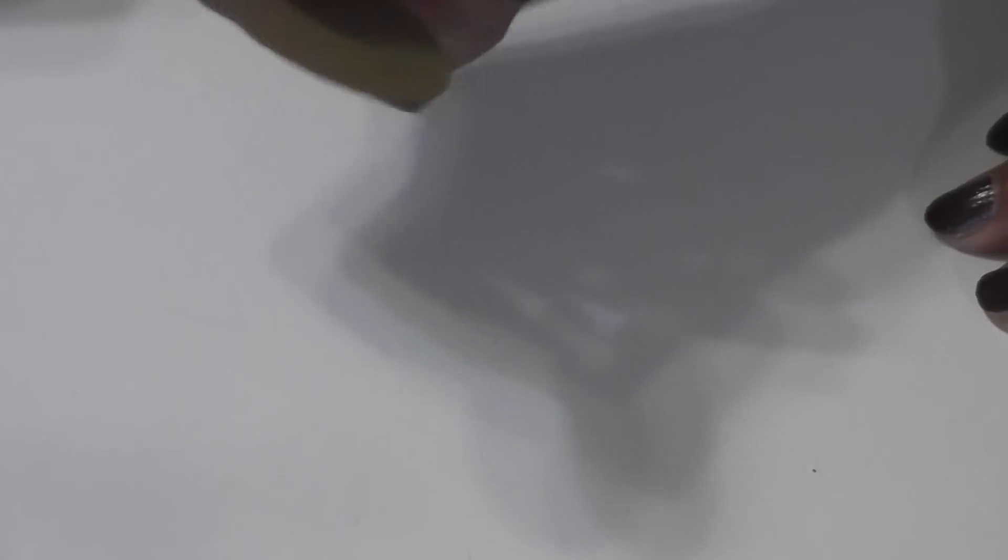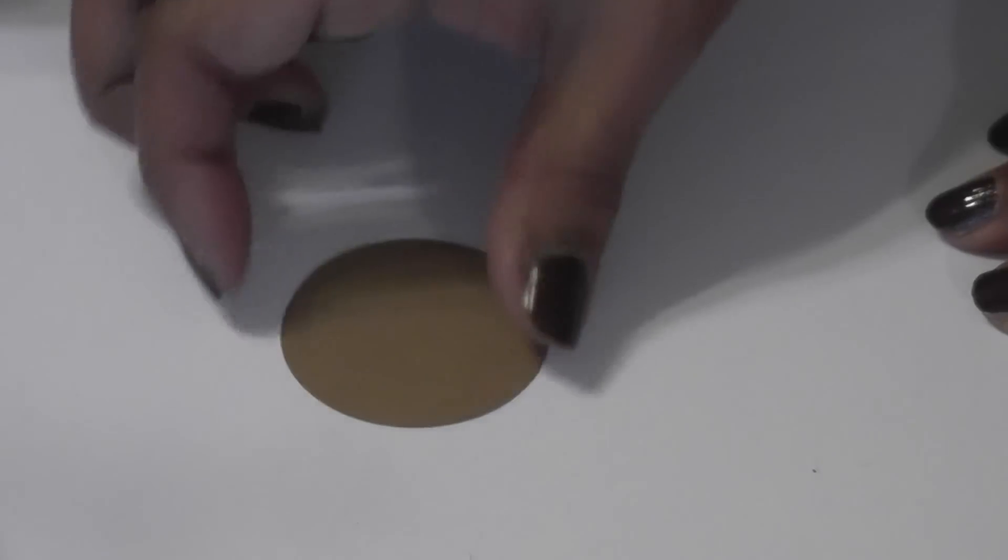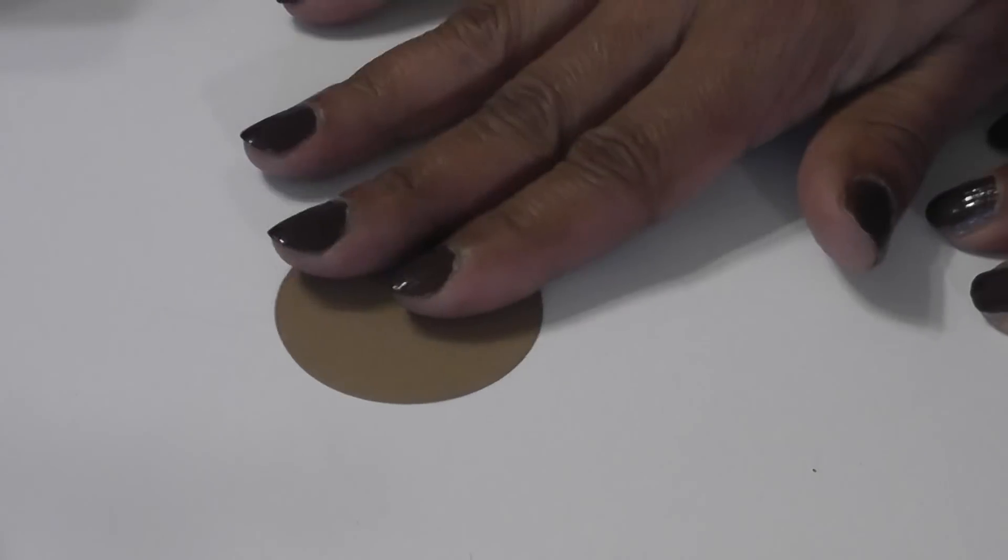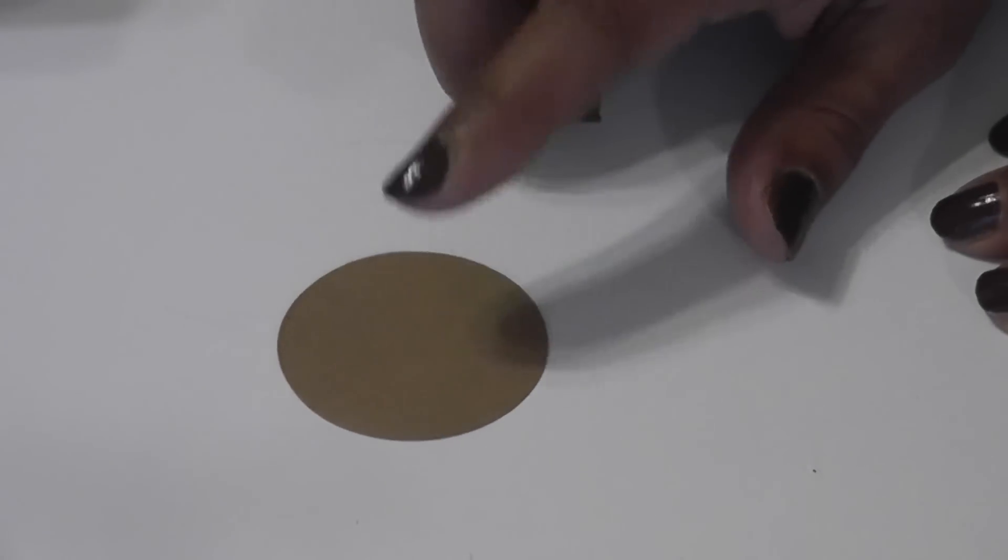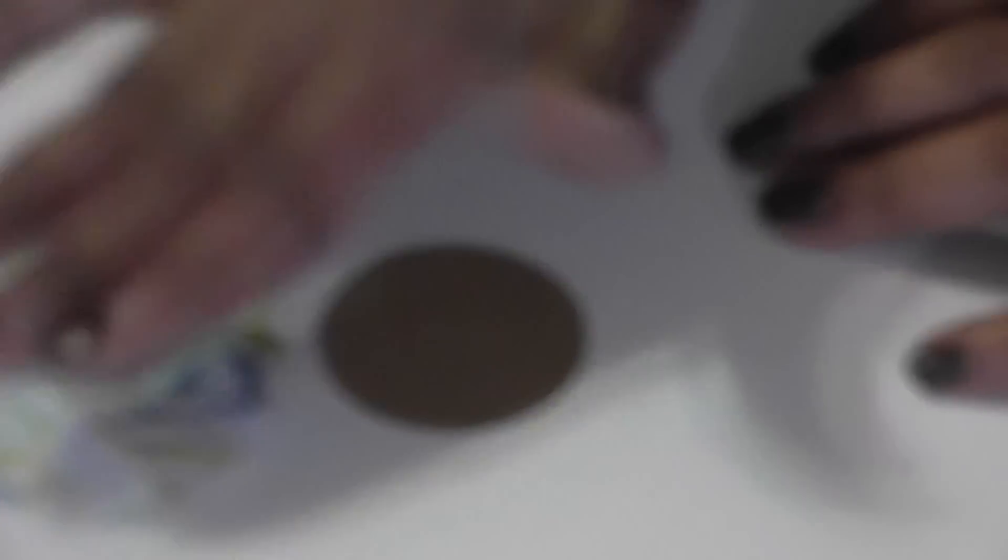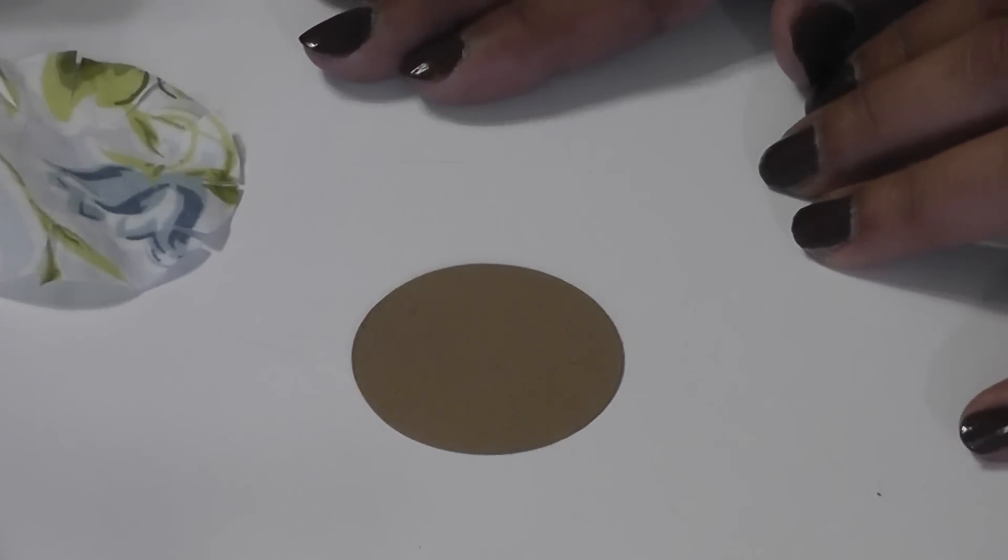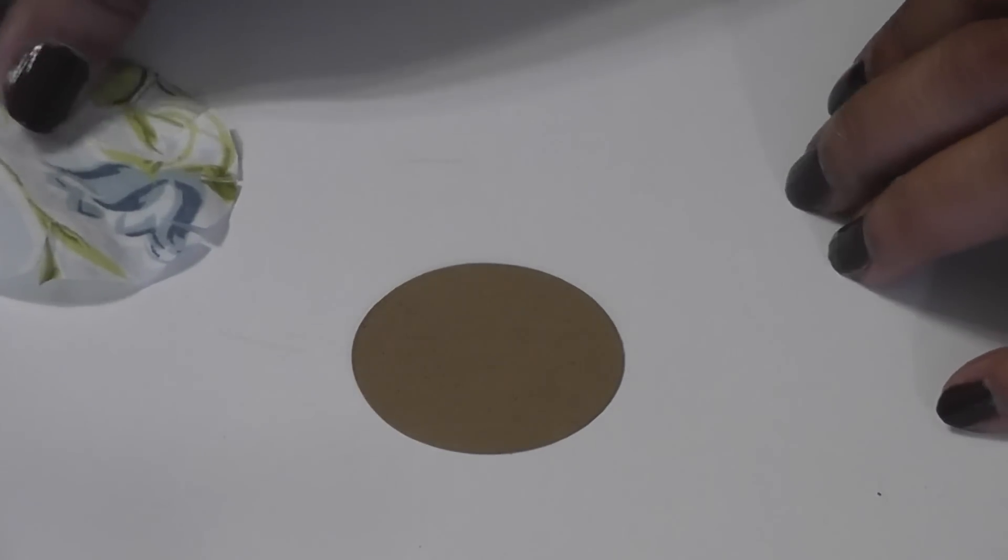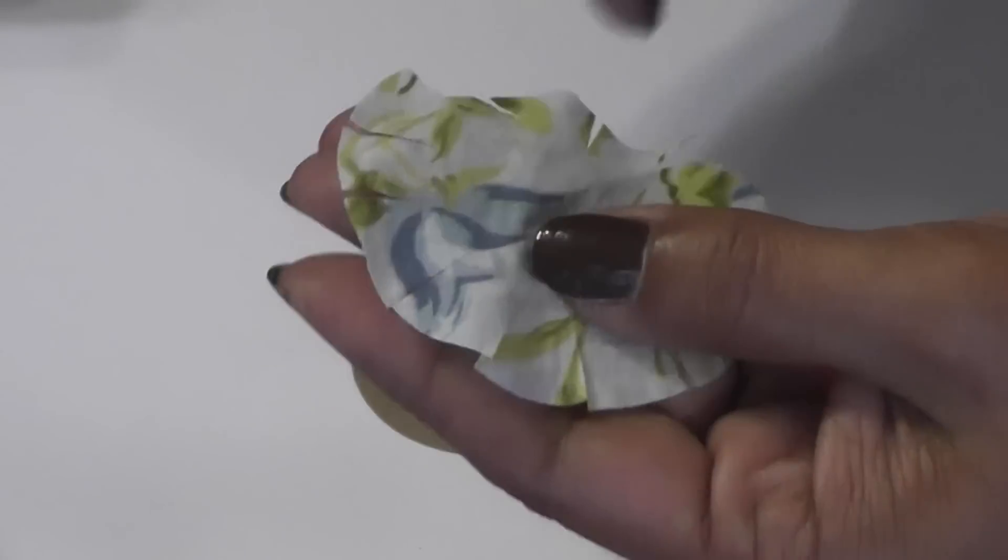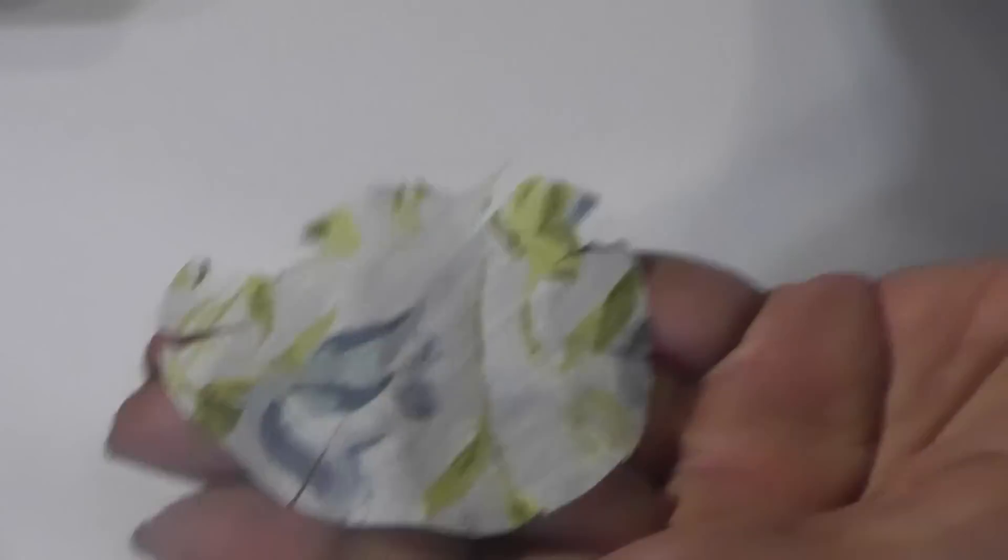So I'm starting off with my base, which I used my circle punch to cut. This is just some craft color cardstock. So for this project, you're going to need four of the large flowers, four of the medium flowers, and four of the small ones. Start with your large ones.